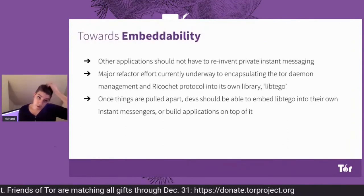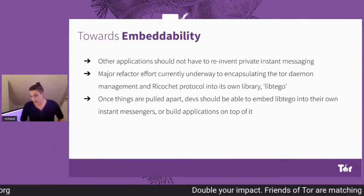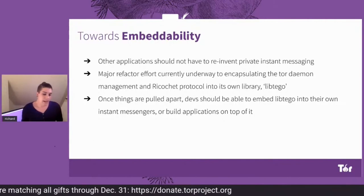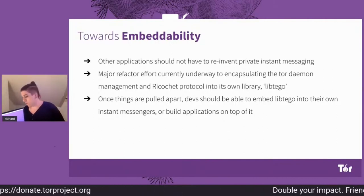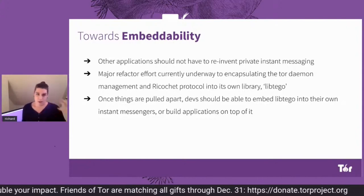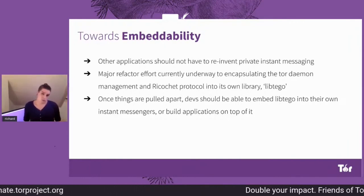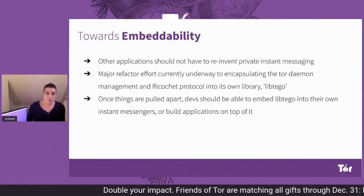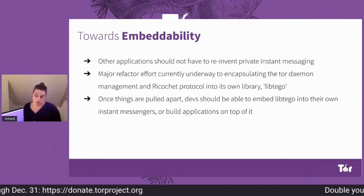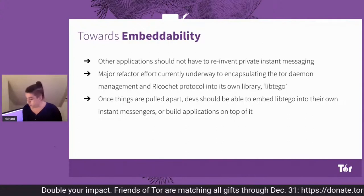We've made very good progress towards embeddability, especially this month. Other applications should not have to reinvent privacy messaging — if you want to add Ricochet support to some app, it should be relatively easy to do that. Ricochet in its current form is basically a single monolithic Qt application, so I've been working on extracting out all the Tor management and the Ricochet protocol, sticking it in its own standalone library currently called LibTigo. Once that's all pulled apart and working, developers should just be able to import that library, use it with a nice C API, and build applications on top of it.